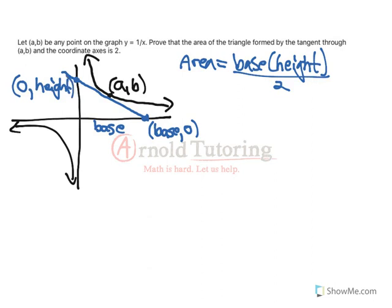Now, we saw the word tangent, so we must have to use something to do with the derivative, because that will be the slope of our tangent. So the derivative, if Y equals 1 over X, Y prime equals negative 1 over X squared.